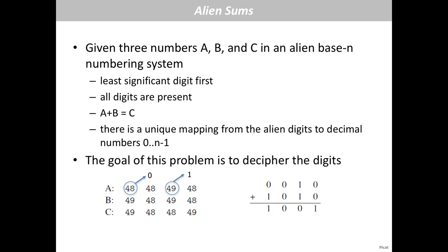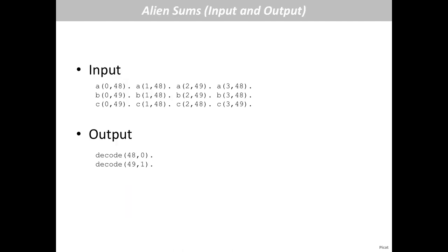For example, given A, B, C, you find the mapping: map alien digit 48 to 0, 49 to 1, and so on, and verify the equation holds. The input is given as facts. You create three arrays, retrieve the alien digits into these arrays, find all distinct digits to determine the base N, create N variables each with domain 0 to N−1, enforce all-different, build a map from digit to variable, compute the alien sums, impose the constraint A plus B equals C, then solve. The solution is quite concise and straightforward.